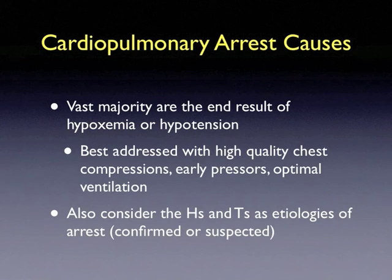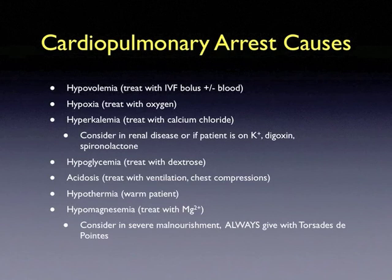The code leader and code team should also consider the H's and T's as etiologies of arrest. These include hypovolemia, hypoxia, hyperkalemia, hypoglycemia, acidosis, hypothermia, and hypomagnesemia.